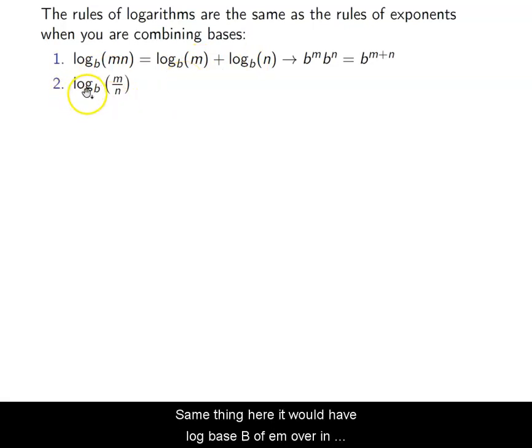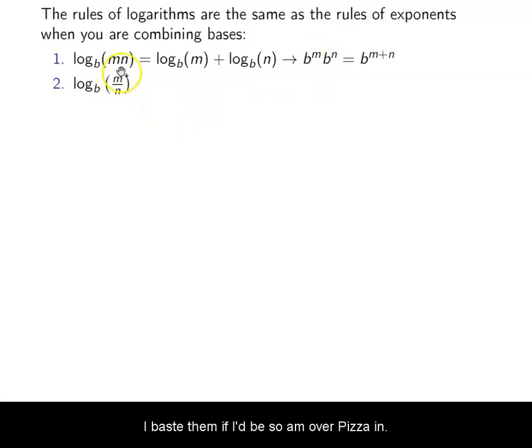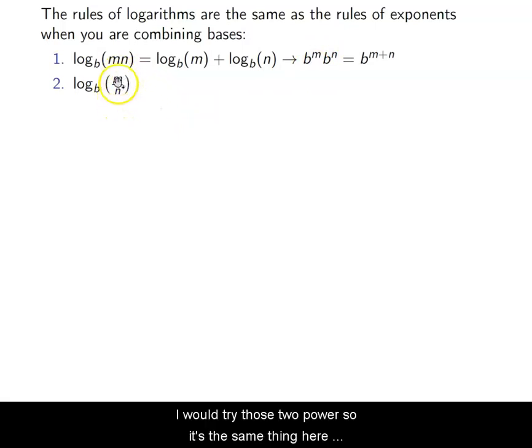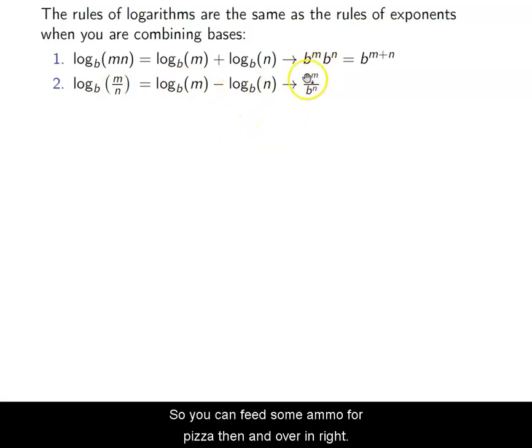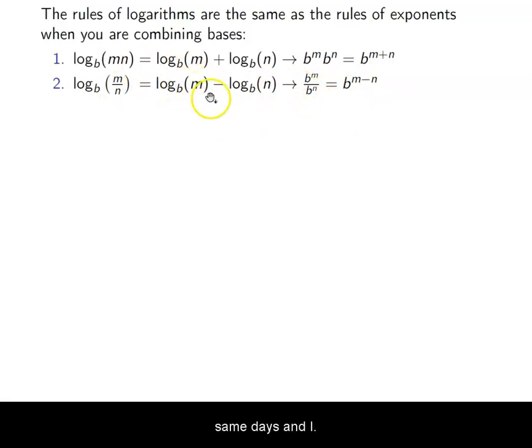Same thing here. When I have log base b of m over n, we'll just think about what we do when we have exponents. If I had b^m over b^n, I would subtract those two powers. So it's the same thing here. This would be extracted to a subtraction problem. So again, b^m over b^n equals b^(m-n). I subtract those two exponents. So I turn that into two logs, same base, and I subtract them.